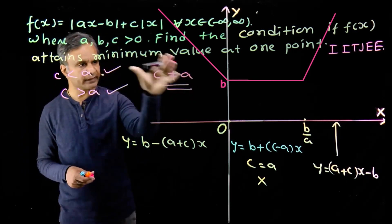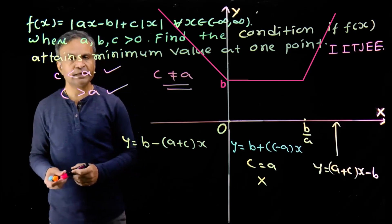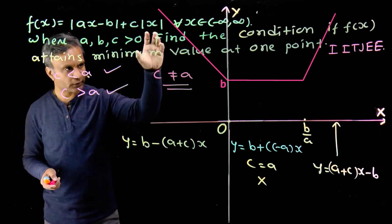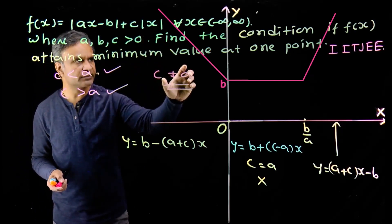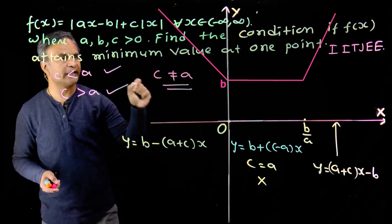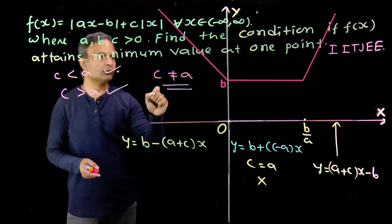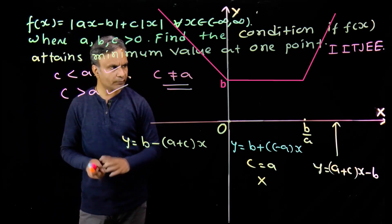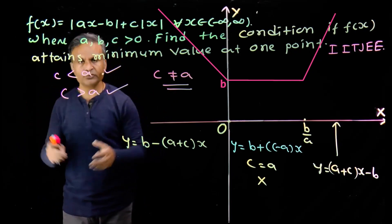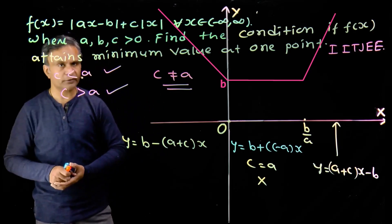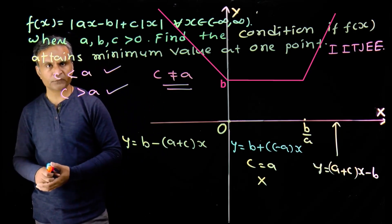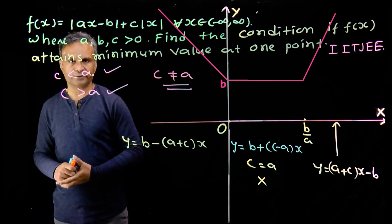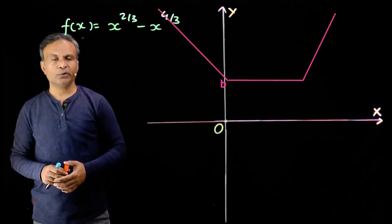Combining both valid cases: c not equal to a. Either c less than a or c greater than a. This is the required condition for exactly one point of minima. A very good question solved using the graphical approach.